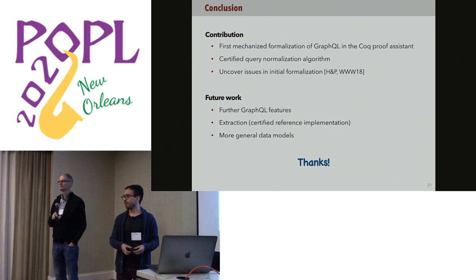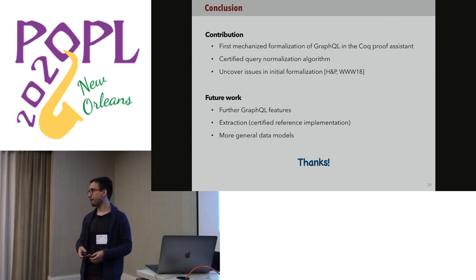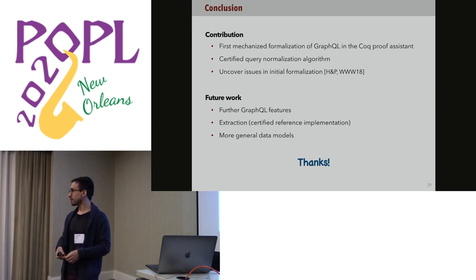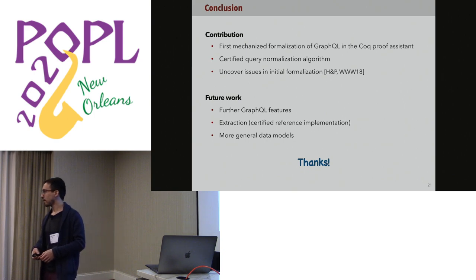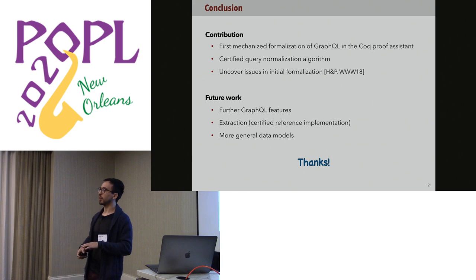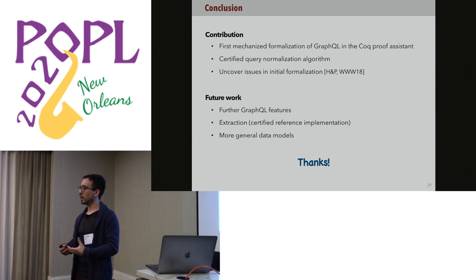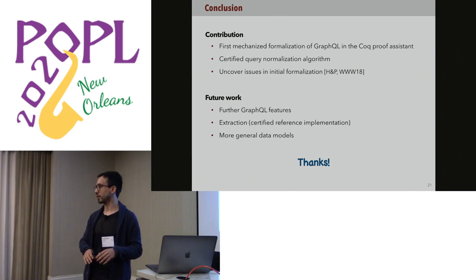Q: You said the normal form is now compositional, whereas it wasn't before. But it seemed like in getting to the normal form you were collapsing the compositionality you originally wanted. In what way is the normal form compositional? A: The normalization algorithm itself is not compositional. The idea is that the semantics for queries in normal form is compositional, and we can transform any query into normal form and then use this compositional semantics on those queries. But the normalization algorithm is not compositional at all.